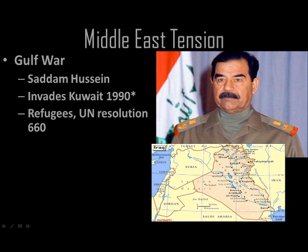One issue is that so many refugees had to flee from Kuwait, which the UN had to deal with. The Security Council, recognizing this as an incredibly aggressive move by the Iraqi army, passed UN Resolution 660, which condemns these actions and demands that Saddam Hussein retreat and evacuate Kuwait. However, as we know, the UN can say lots of things but doesn't actually have much power, so it does fall to other countries to take up this issue and get involved militarily.